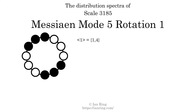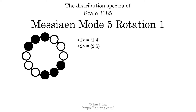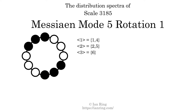The spectrum width of this generic interval is the highest, 4, minus the lowest, 1, which equals 3. The generic interval of 2 scale steps comes in 2 different specific interval sizes: 2 semitones and 5 semitones. The spectrum width of this generic interval is 3. The generic interval of 3 scale steps has just 1 specific interval size: 6 semitones. The spectrum width of this generic interval is 0.